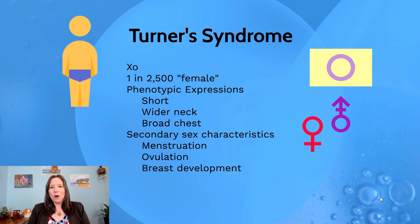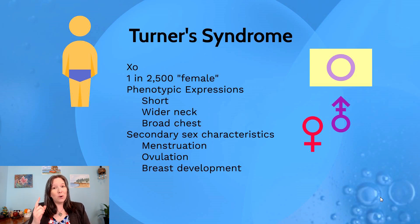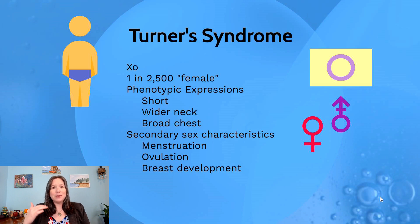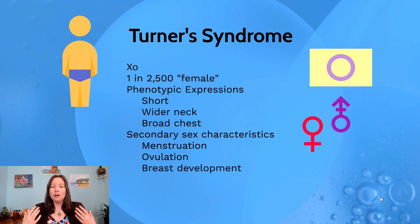In Turner syndrome, an individual only has one sex chromosome — not XX or XY, but a single X chromosome. The prevalence rate is about 1 in every 2,500 births assigned female. Because there's only one X chromosome, there are some phenotypical expressions associated with this condition. People with Turner syndrome tend to be shorter in stature, have a wider neck, and a broader chest. At the time of puberty, their experience is very different from females with two X chromosomes.